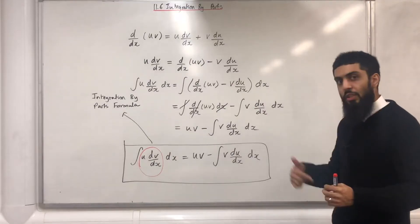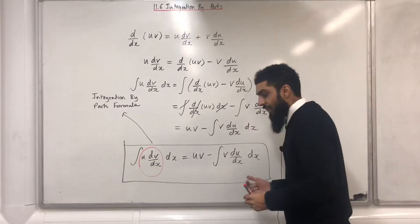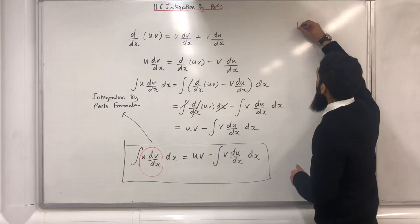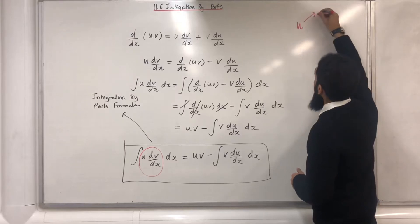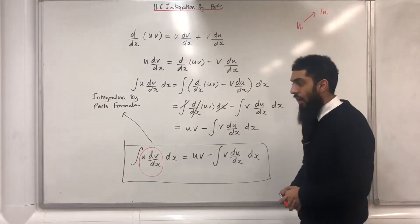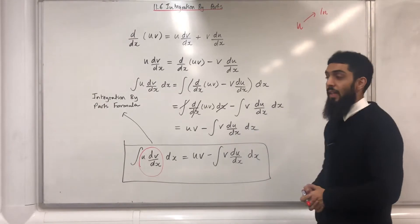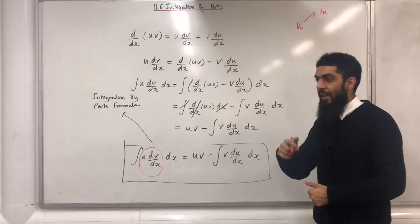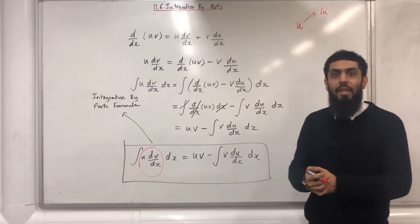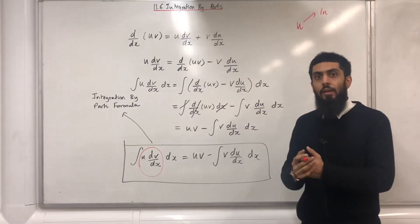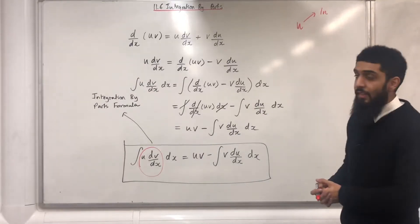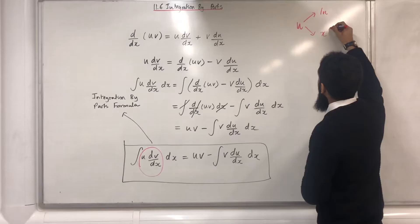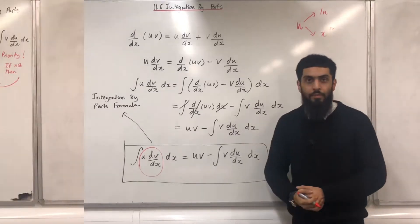If the product u dv/dx consists of ln of something, then your u will be the ln. However, if your product does not consist of ln but consists of x to the power n, where n can be any real number, then u will be x to the power n.